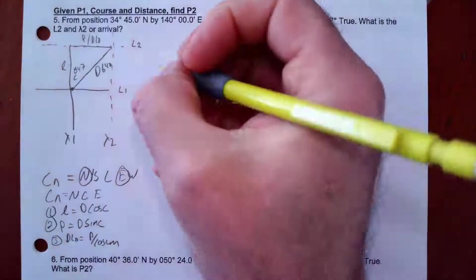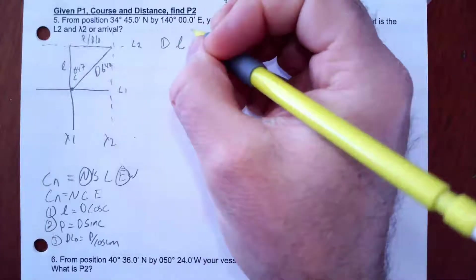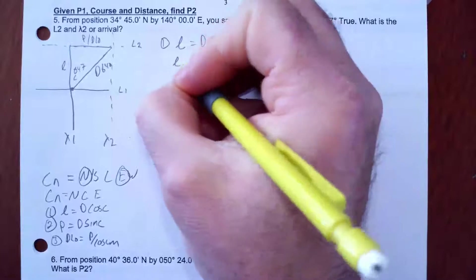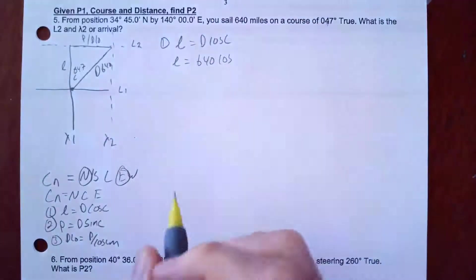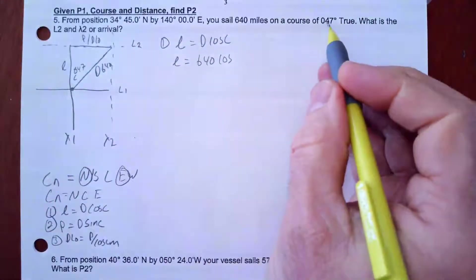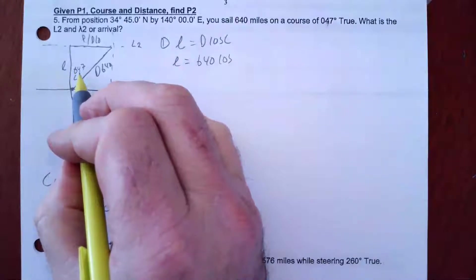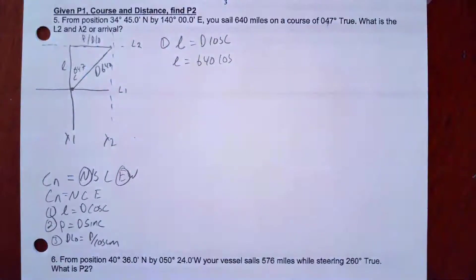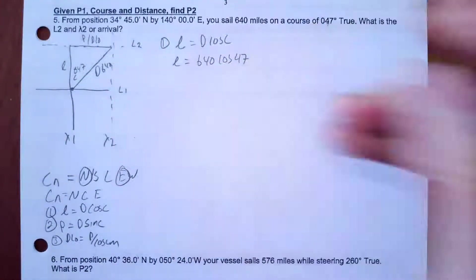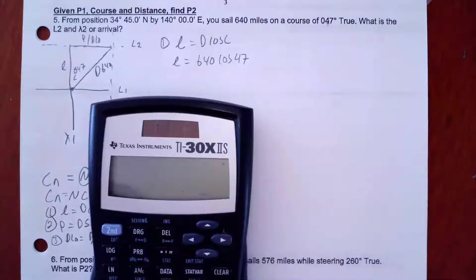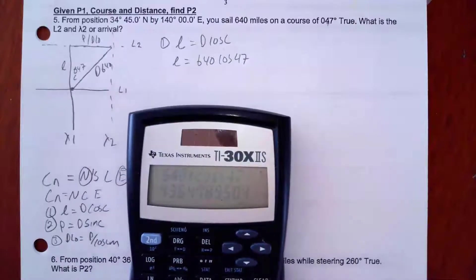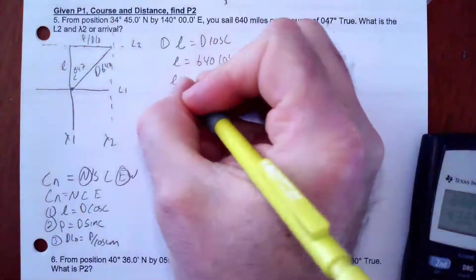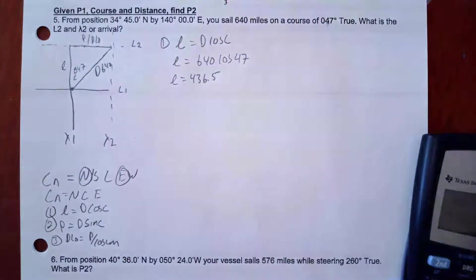Formula one: calculate my difference in latitude equals D cosine C. So D is 640 times the cosine of 47°. Because this is in quadrant one, I can use 47° directly since C and CN are the same in this quadrant. So 640 times cosine of 47 gives me l = 436.5.